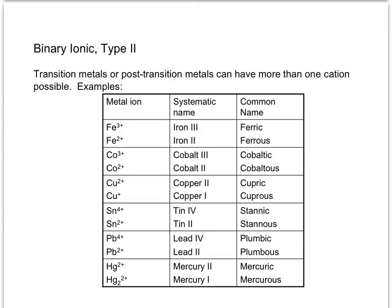Mercury is a little interesting. Mercury 2+ is simply the mercury(II) ion. But the other form exists as a dimer — two mercury atoms with an overall 2+ charge, meaning each mercury has a +1 charge. That's why you call it mercury(I), or mercurous.